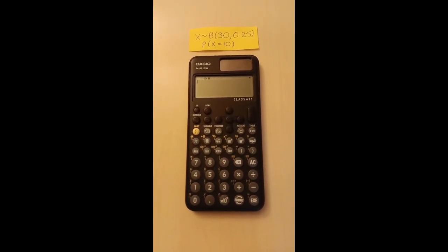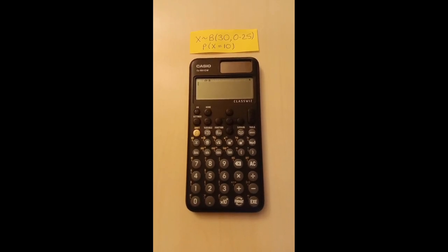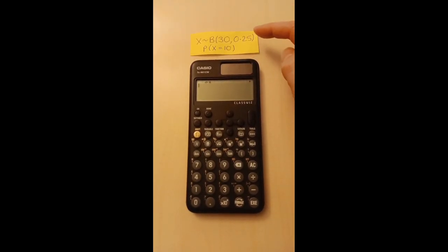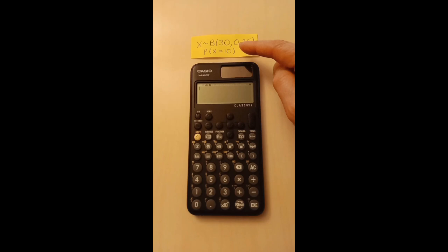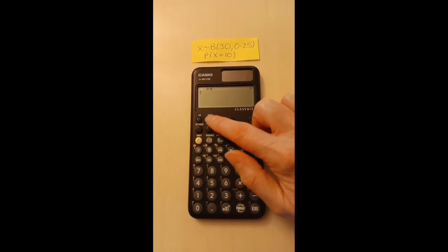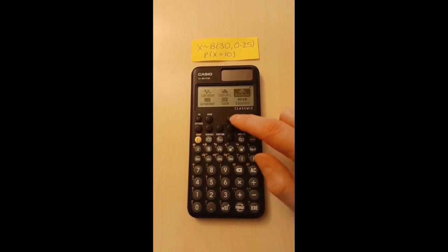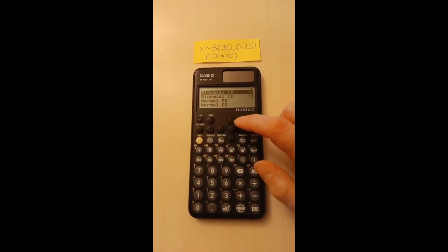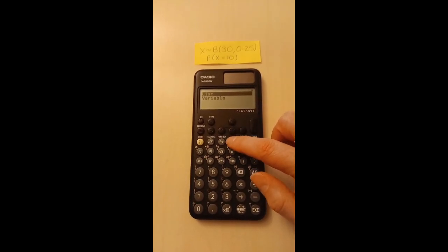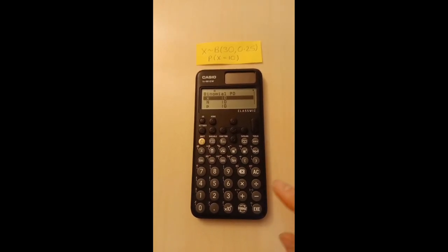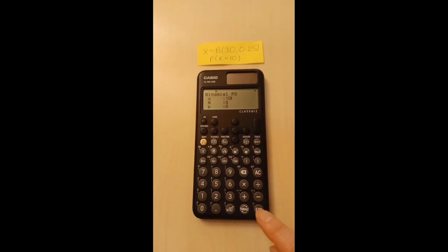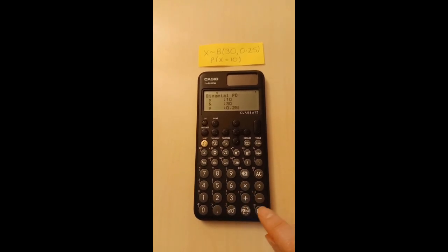In this video we're going to calculate a probability using the binomial distribution. If a random variable X has this binomial distribution, we can calculate the probability that X equals 10 by pressing home, move across, press OK, then OK to choose binomial probability distribution. Move down one to choose variable, press OK, and we can now enter the information: X equals 10, execute; N is 30, execute; P is 0.25, execute.